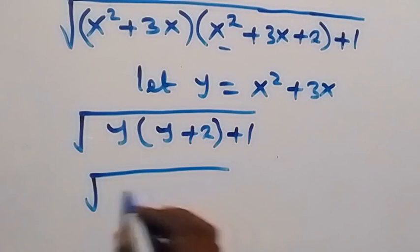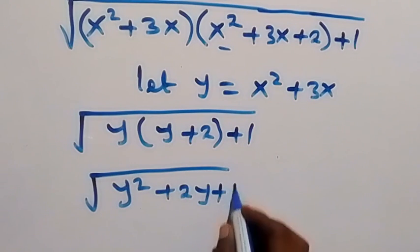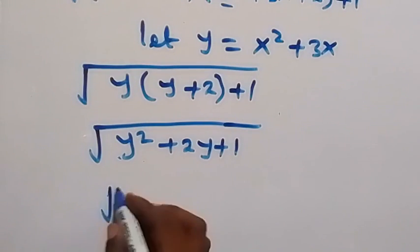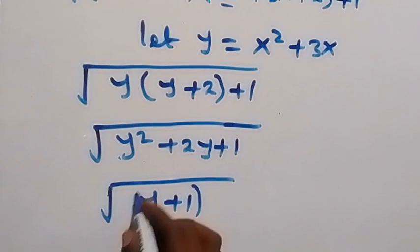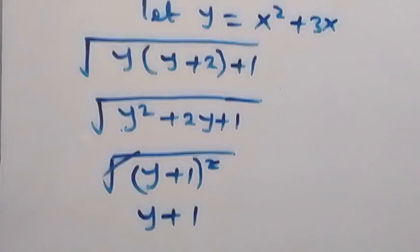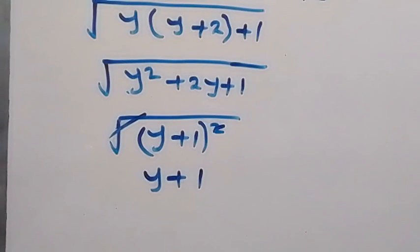When we open this bracket we have the square root of y squared plus 2y plus 1. We can recognize this as the square root of (y plus 1) squared, which simplifies to y plus 1.